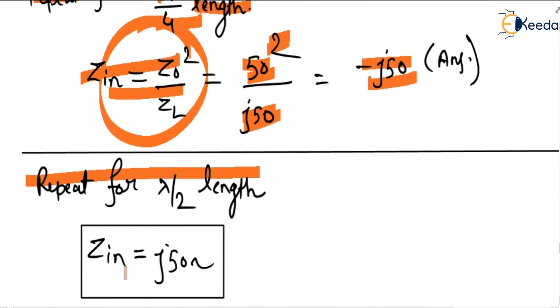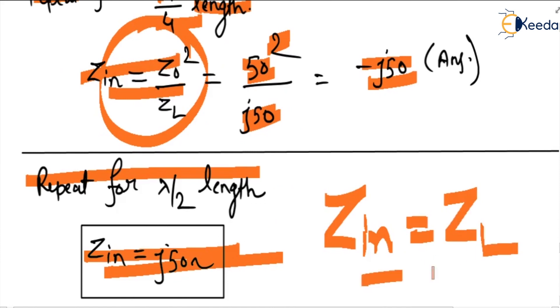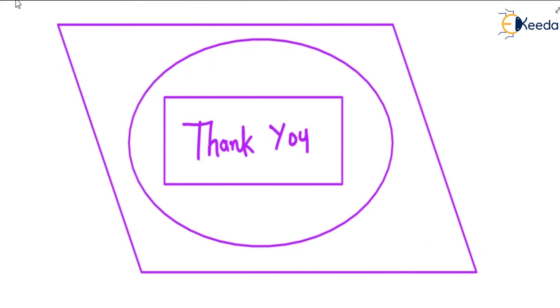If we repeat this question for lambda by 2 length, then for lambda by 2 length the answer is j50, because Zin equals ZL at this lambda by 2 length. Thank you for watching the video.